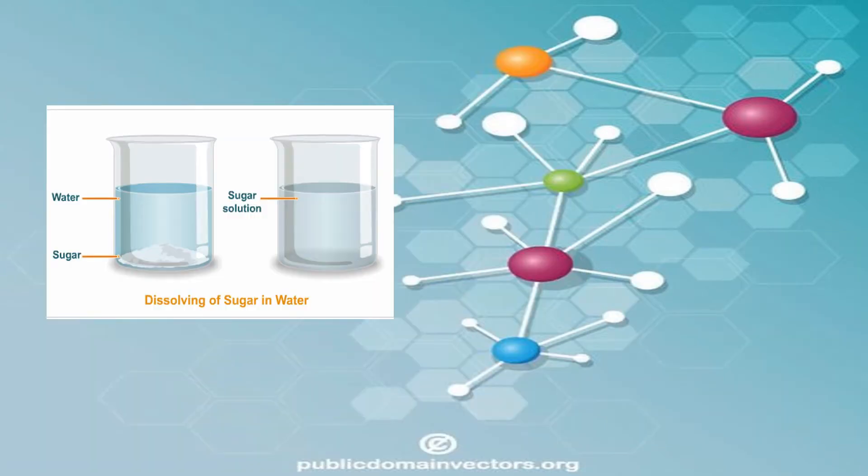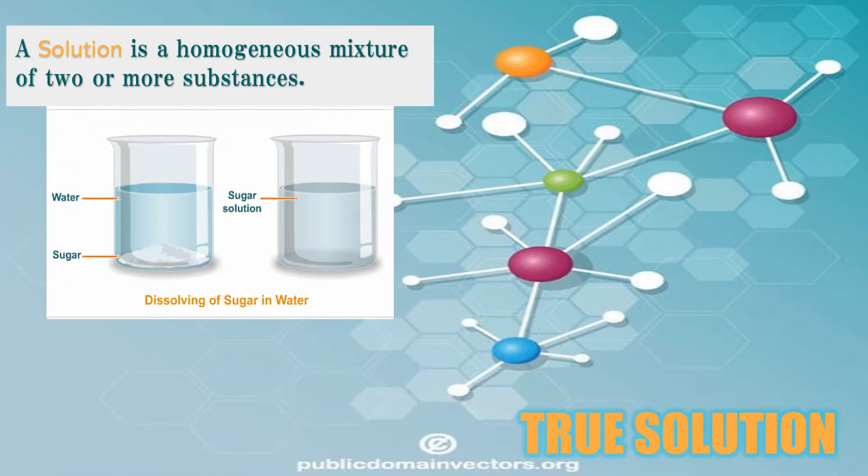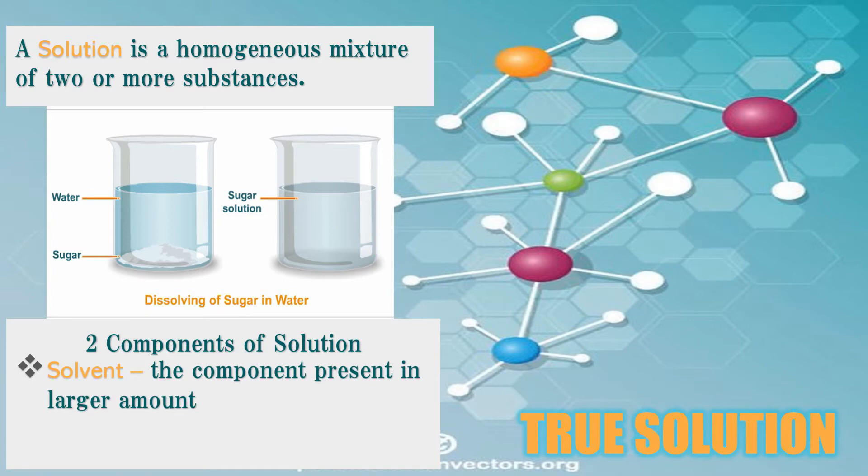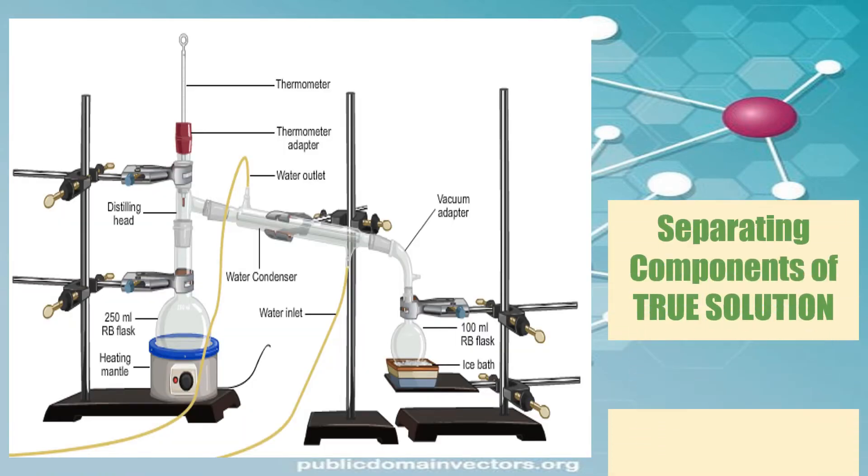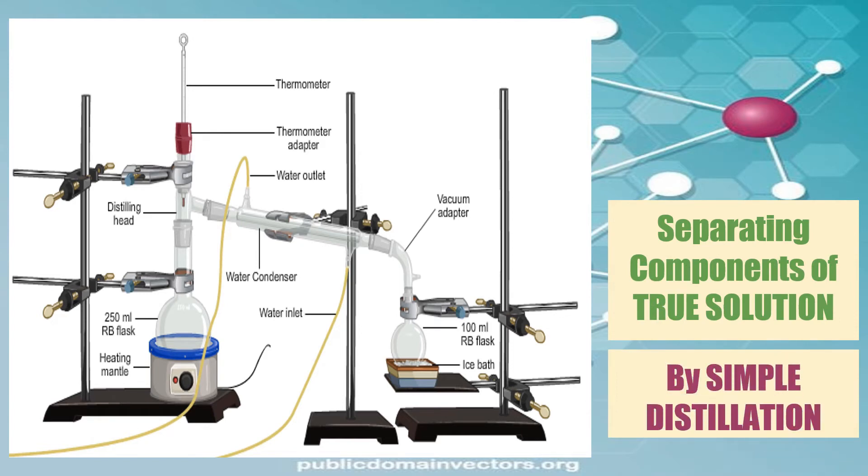Let us find out which method will best apply in separating the components of true solutions. Again, true solution is a homogeneous mixture of two or more substances. It has two components, the solvent, which is present in larger amount, and the solute is the component present in smaller quantity. The components of true solution can be separated by simple distillation.